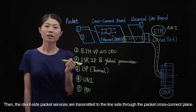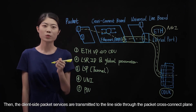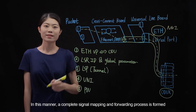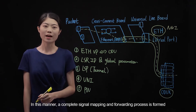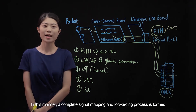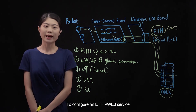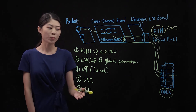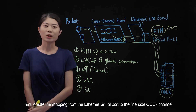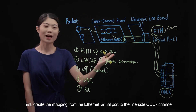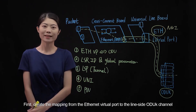Then the client-side packet services are transmitted to the line-side through the packet cross-connect plane. In this manner, a complete signal mapping and forwarding process is formed. Now let's make a summary: to configure an FPWE3 service, first create the mapping from the Ethernet virtual port to the line-side ODUK channel.